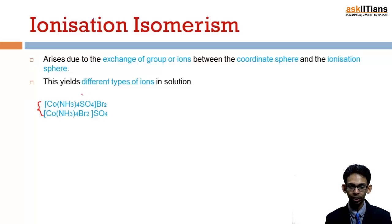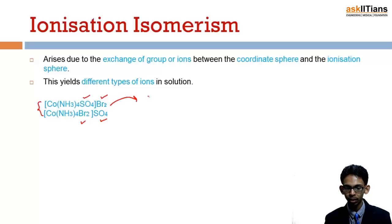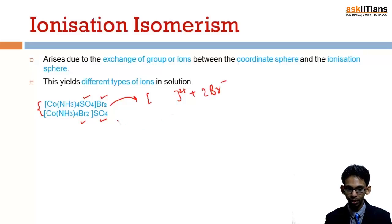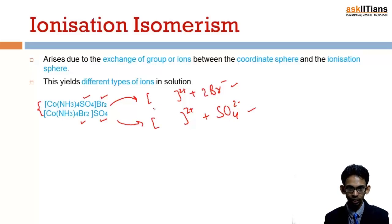Both compounds have the same chemical formula. In the first one, bromide is at primary valency while sulfate is at secondary valency, but in the second one, sulfate comes to primary valency and bromine goes to secondary valency. When the first compound is dissolved in water, it produces a complex ion and two bromide ions. When the second one is dissolved in water, it produces a complex ion and a sulfate ion. These two produce different ions on ionization — the first gives bromide ions, the second gives sulfate ions.